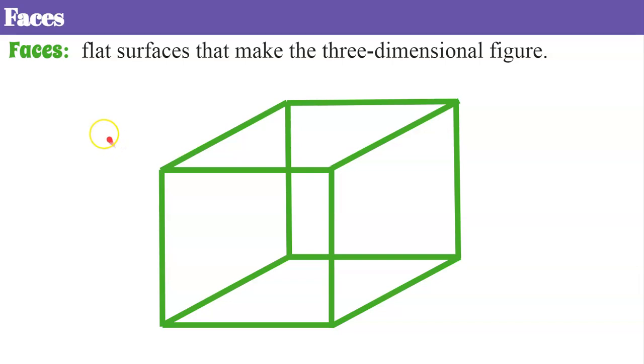Now let's talk about faces. Faces are flat surfaces that make the three-dimensional figure. So think about making a box and what material you would use to make the box. The material you use to make the box forms your faces. So if you're making a cardboard box then your faces would be cardboard.